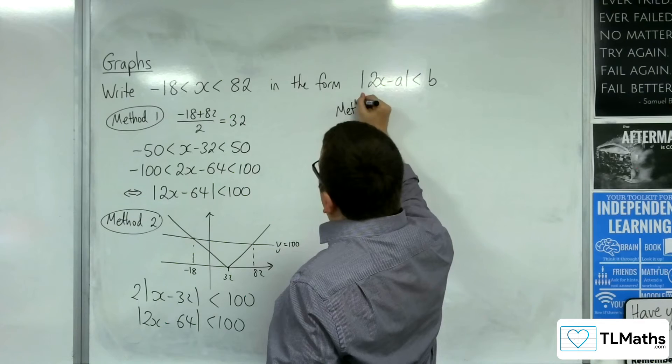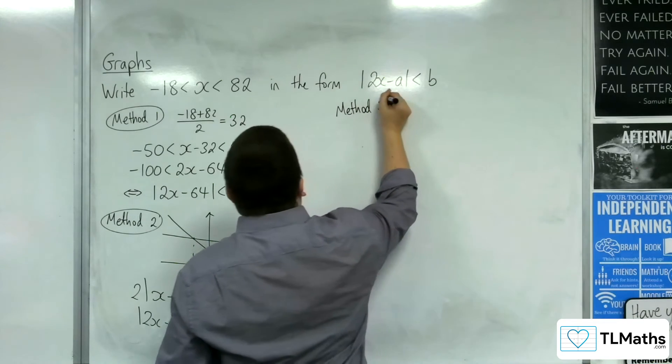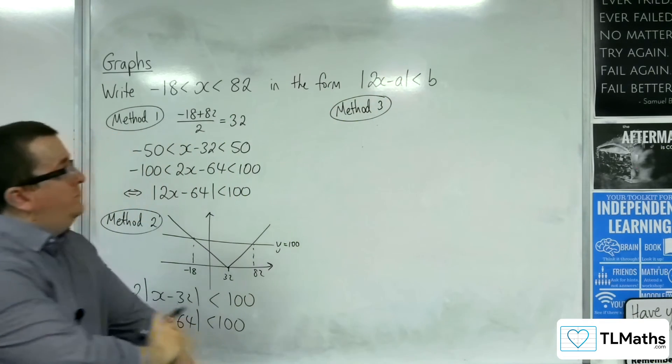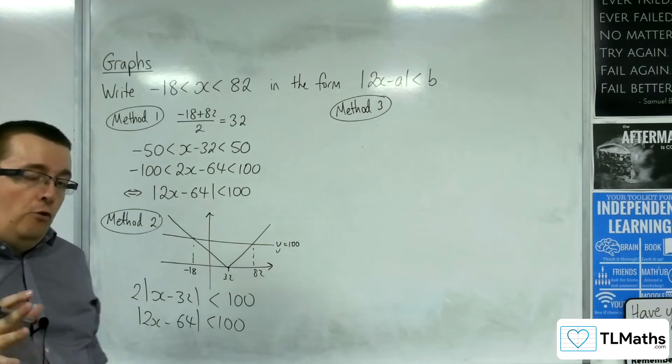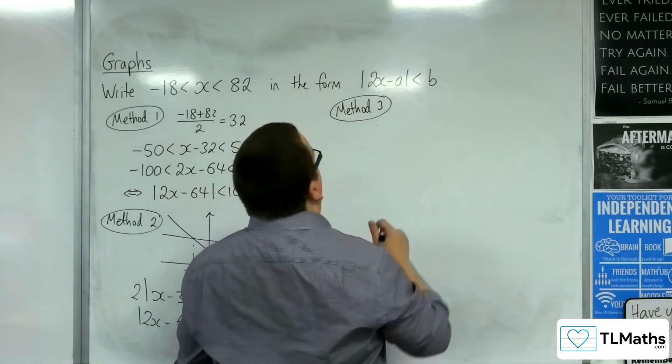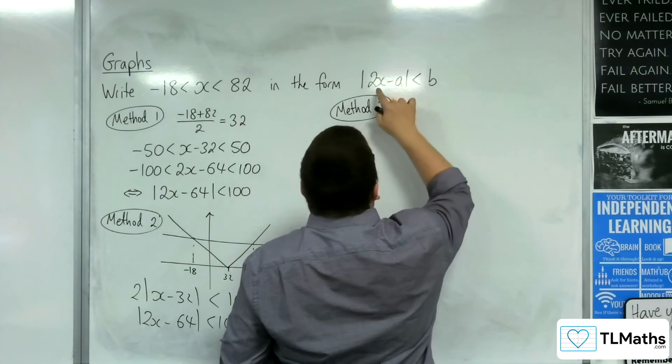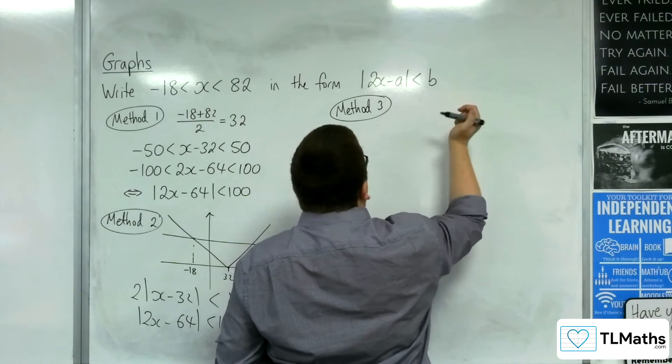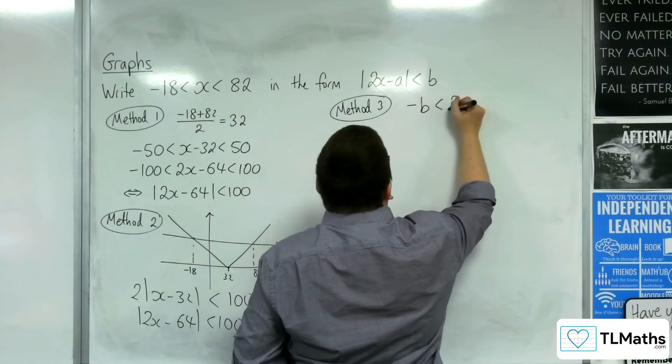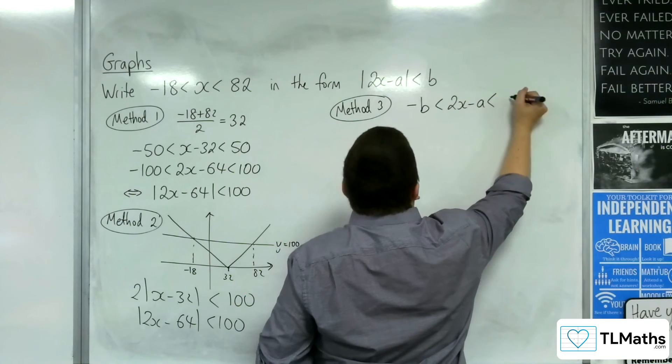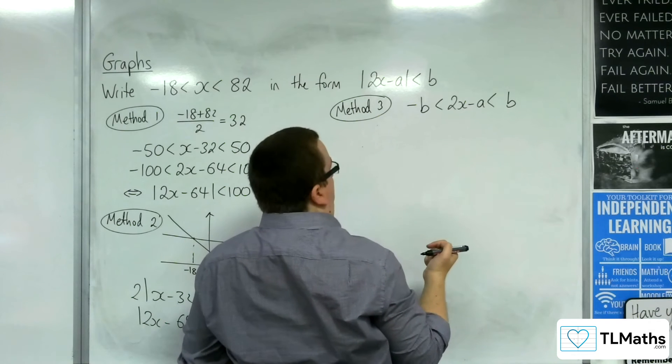Third method. I said it was going to be a simultaneous equations method. So what this relies on is looking at the format that you need to write it in. And saying, okay, well, if |2x - a| < b, that means that the 2x - a is between -b and b.